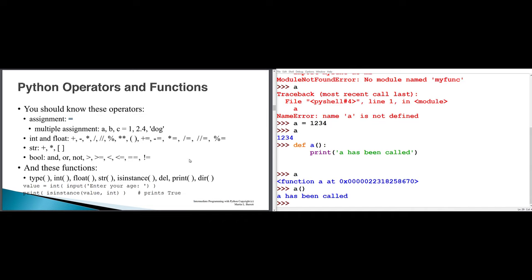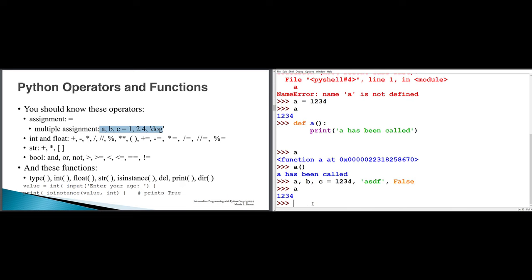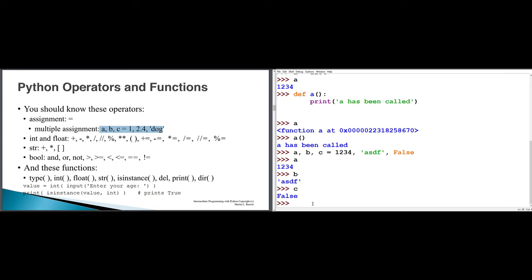With the single equal sign — the gets operator — you can set up the variable to refer to a value. With def and the variable name in parentheses, you can define that thing as a function. You can also do multiple assignment by putting multiple variables on the left side separated by commas, then your assignment operator, followed by an equivalent number of things on the right side. So a refers to 1234, b refers to ASDF, c refers to false. The number of variables on the left and values on the right must match, otherwise you get an error.